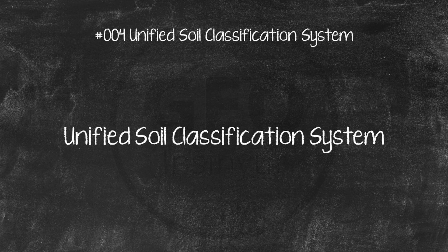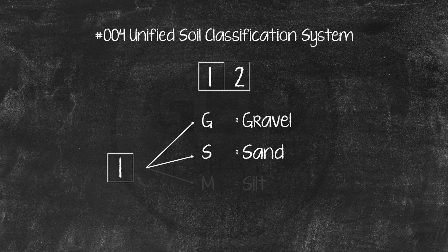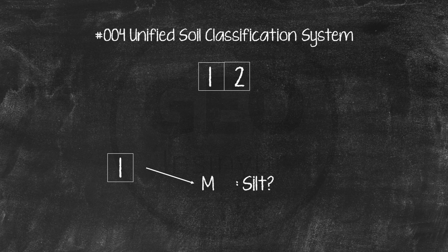The Unified Soil Classification System, or USCS, is the system used internationally to classify soils. Most commonly, it employs a two-letter symbol. The first letter indicates whether the soil is gravel (G), sand (S), silt (M), or clay (C). The letter for silt could not be S, as that letter was already used for sand, so the letter M was chosen — from the Swedish word 'mo', meaning silt.